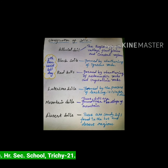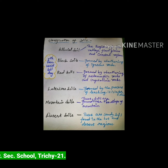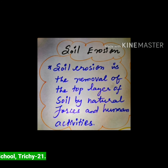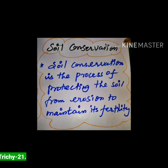Next, soil erosion. Soil erosion is the removal or destruction of the top layer of soil by natural forces and human activities. Soil erosion reduces the fertility of soil, which in turn reduces agricultural productivity. Soil conservation is the process of protecting the soil from erosion to maintain its fertility.